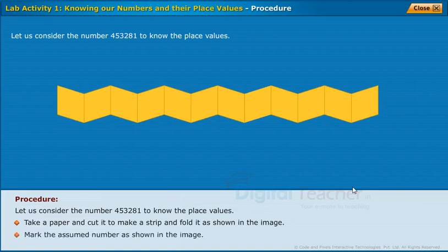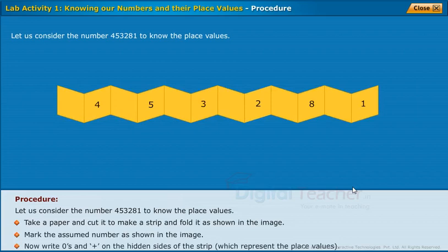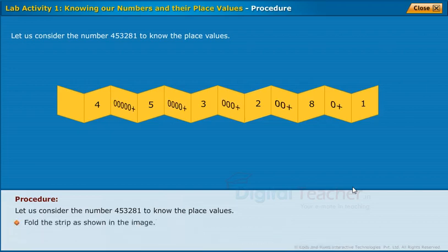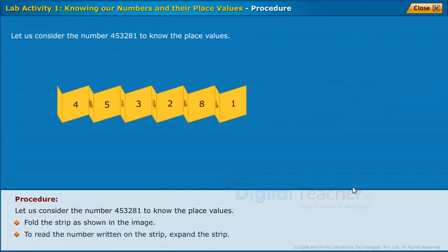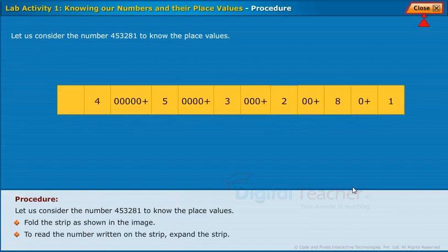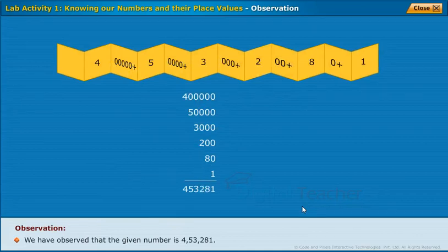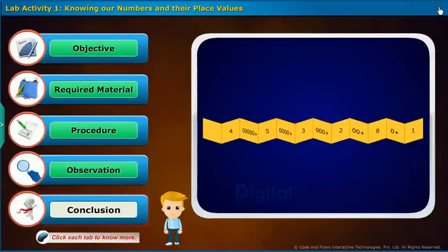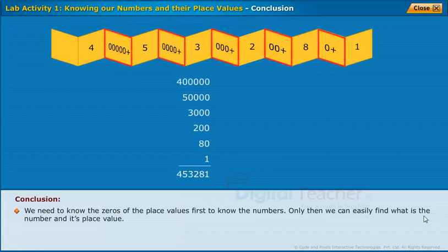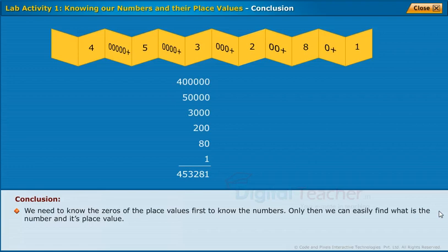Mark the assumed number as shown in the image. Now, write zeros and plus on the hidden sides of the strip which represent the place values. Fold the strip as shown in the image. To read the number written on the strip, expand the strip. We have observed that the given number is 4,53,281. We need to know the zeros of the place values first to know the numbers. Only then we can easily find what is the number and its place value.